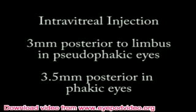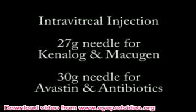We normally inject three millimeters posterior to the limbus in pseudophakic eyes and three and a half millimeters posteriorly in phakic eyes. We typically use 27 gauge needles for Kenalog and Macugen, and 30 gauge needles for Avastin and intravitreal antibiotics.